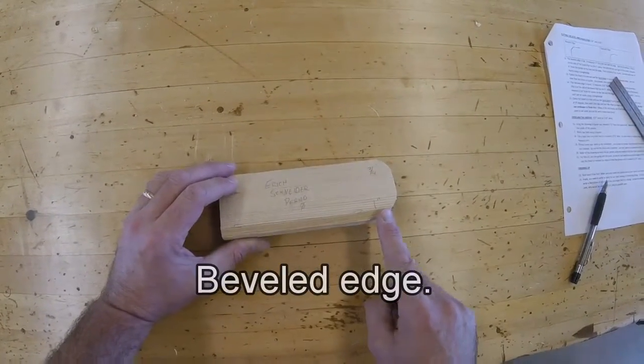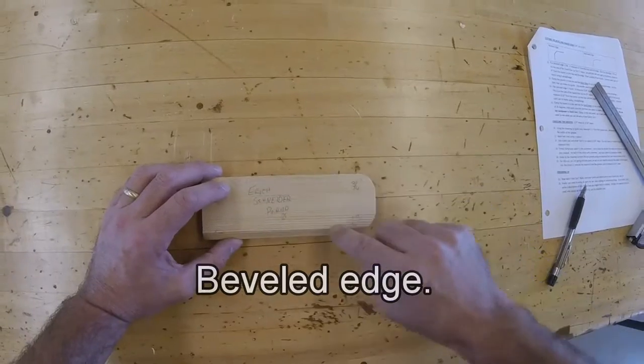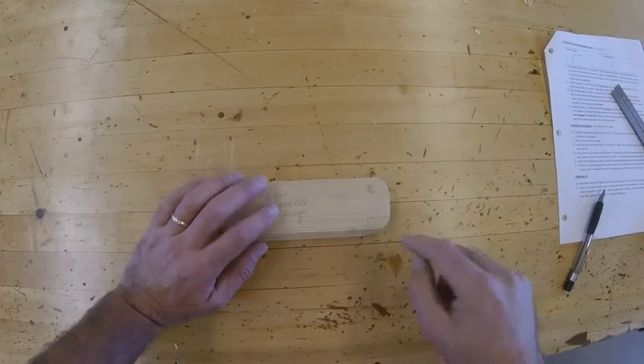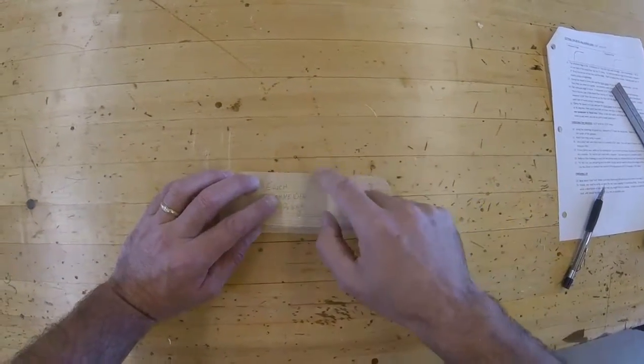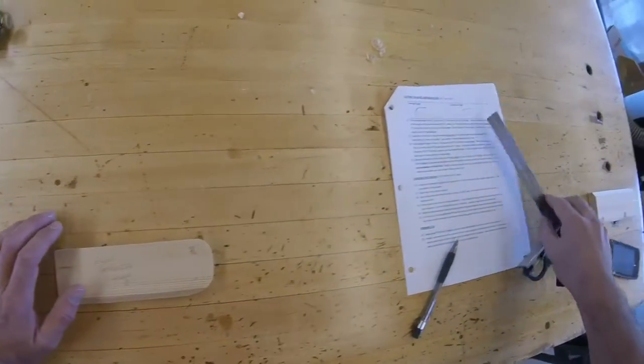This is my beveled edge. And it's on the one inch radius. Now I need to do the radius edge. This is the radius end. This will be my radius edge.